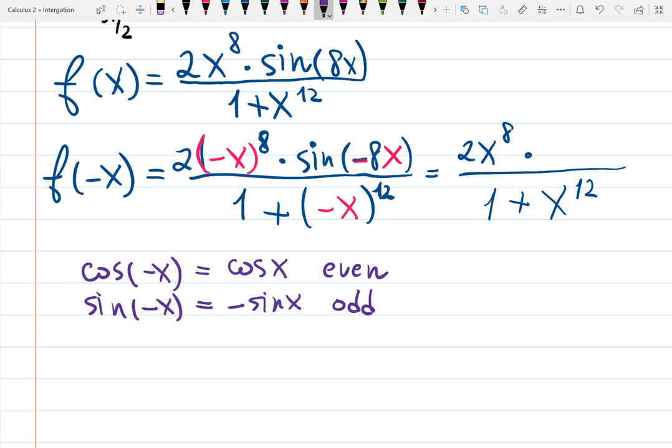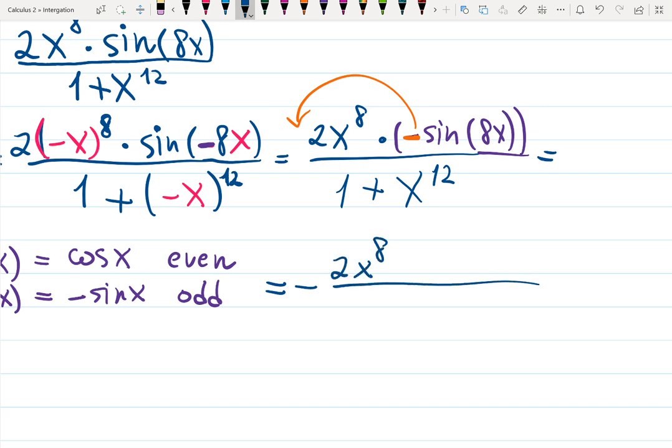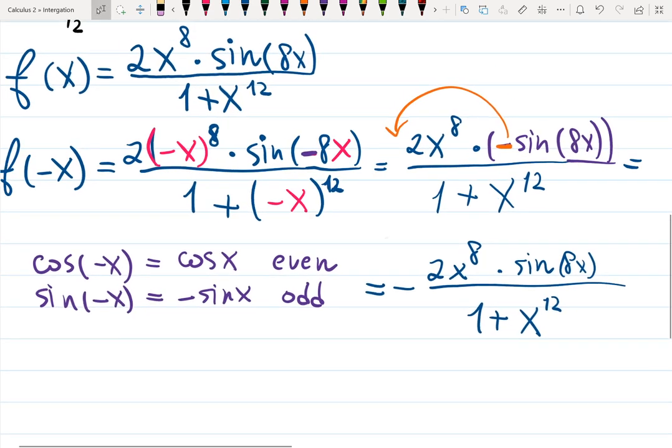So since I have negative sine over here, it will be negative sine of 8x. Since all other signs disappeared and only one negative stayed, and this negative is here multiplied in the numerator, I can kick it out, away, out from the whole fraction. So the answer will be negative 2x to the 8, sine of 8x, over 1 plus x to the 12.